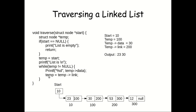Now we change temp to temp->link — temp->link is 200, so the new value of temp becomes 200. Now temp->data is 53 and temp->link is 300, and we will print temp->data which is 53.